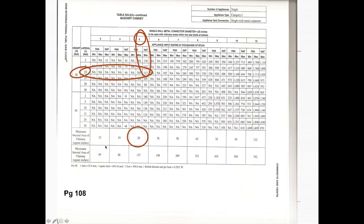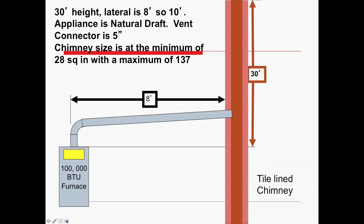Going down in this chart, the five-inch connector can go into a chimney with a minimum and maximum internal area. The minimum internal area is 28 square inches and the maximum internal area is 137 square inches. Our chimney is 28 square inches — that meets the minimum of 28 and is well under the maximum of 137. So this one will work.